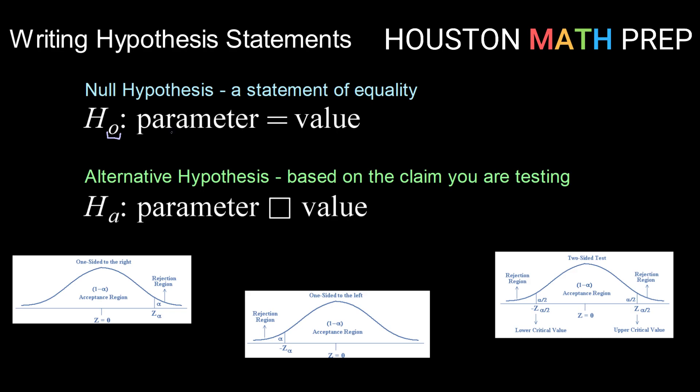So that statement of equality will look like parameter equals value. We usually test two types of parameters, either a population mean mu or a population proportion p. And we're going to say that that is equal to some value. That value will be given. But our null hypothesis is a statement of the status quo, what we believe to be true.